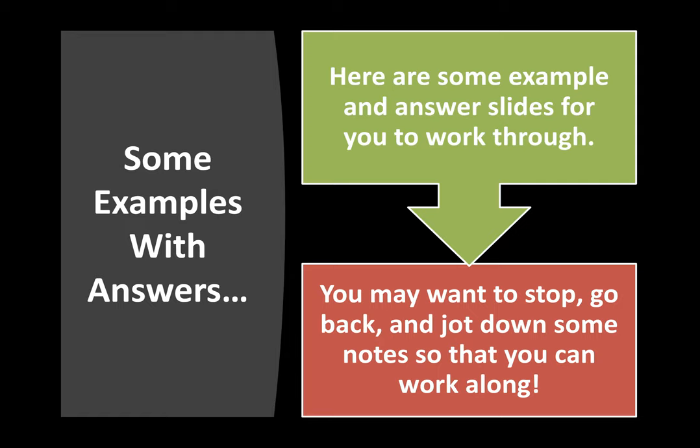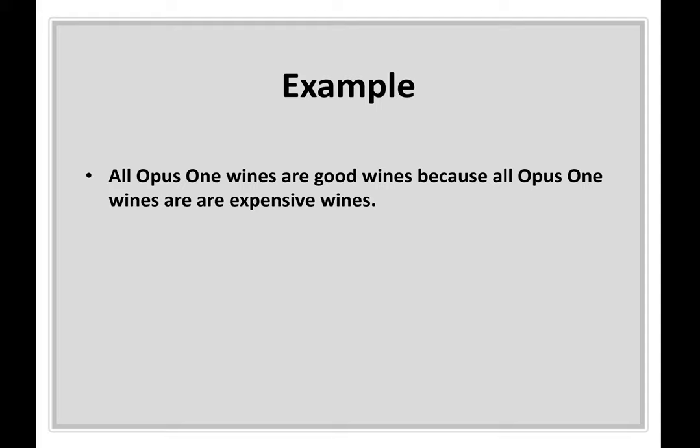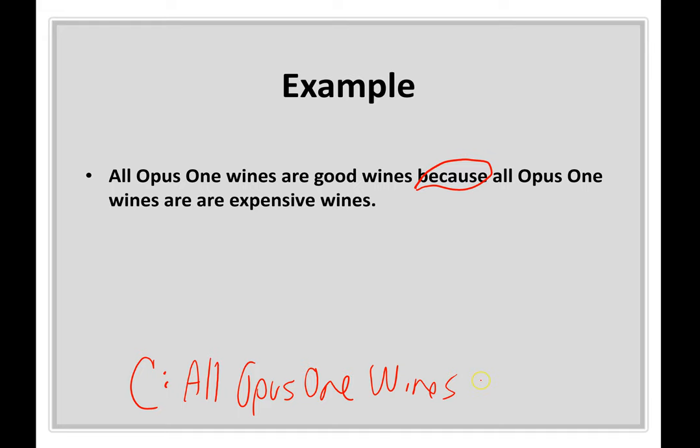Here are a few more examples with answers. You may want to stop and check with the PowerPoint, and always email me or come see me during office hours if you need help. 'All Opus 1 wines are good because all Opus 1 wines are expensive wines.' We have a premise indicator 'because,' so the conclusion is: all Opus 1 wines are good wines.